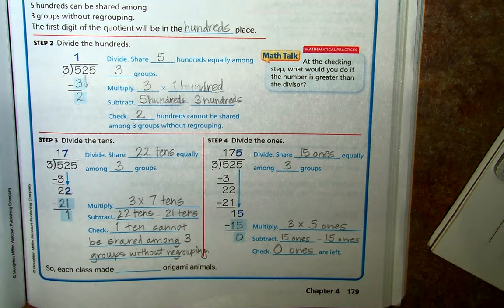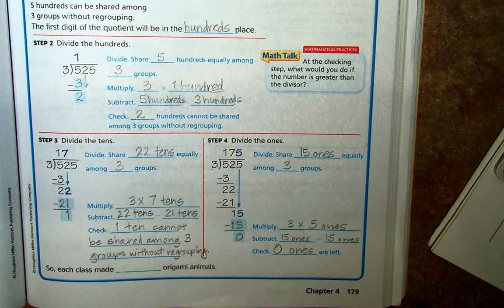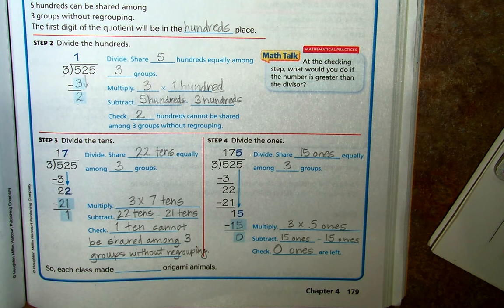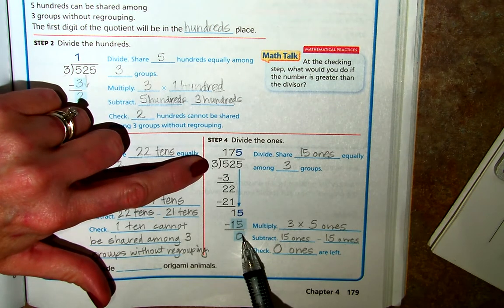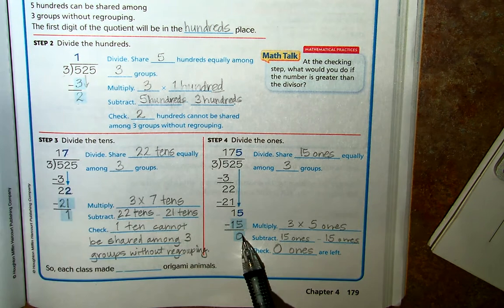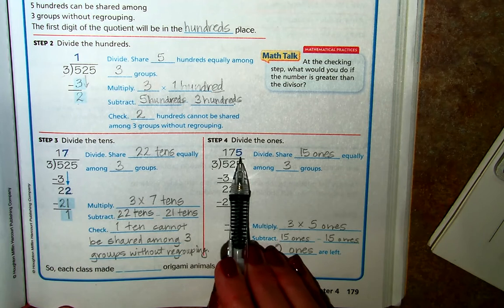We have 0 ones that are left. So just like I told you when we were doing either of the other two strategies, the rectangular or area model, or the partial quotient strategy, once we get to 0 or a number that is less than our divisor, then we can stop once we have a number all the way to the ones place.